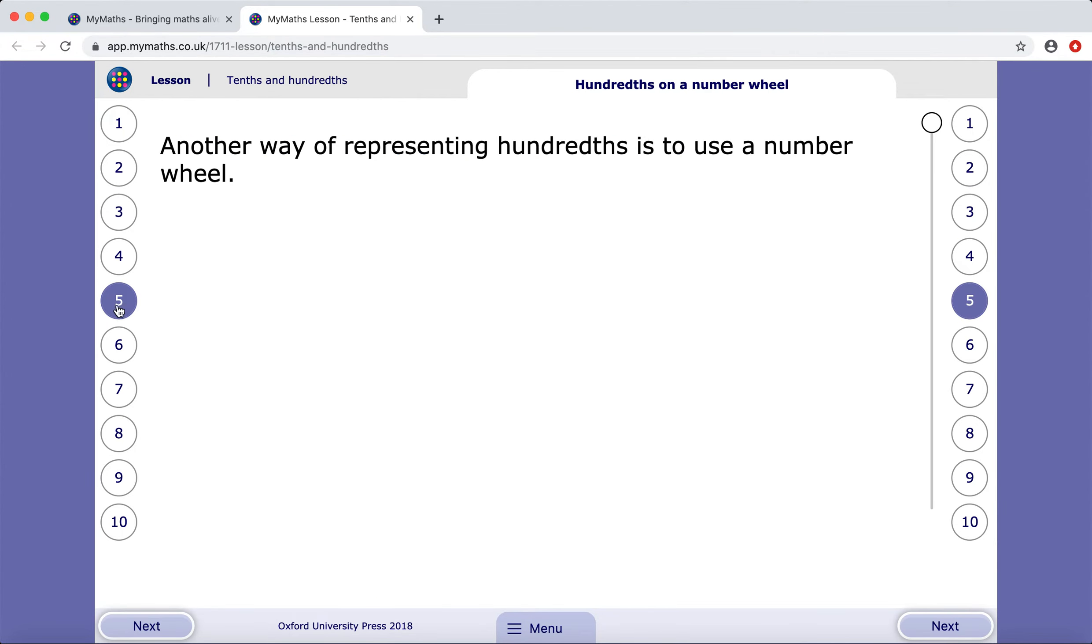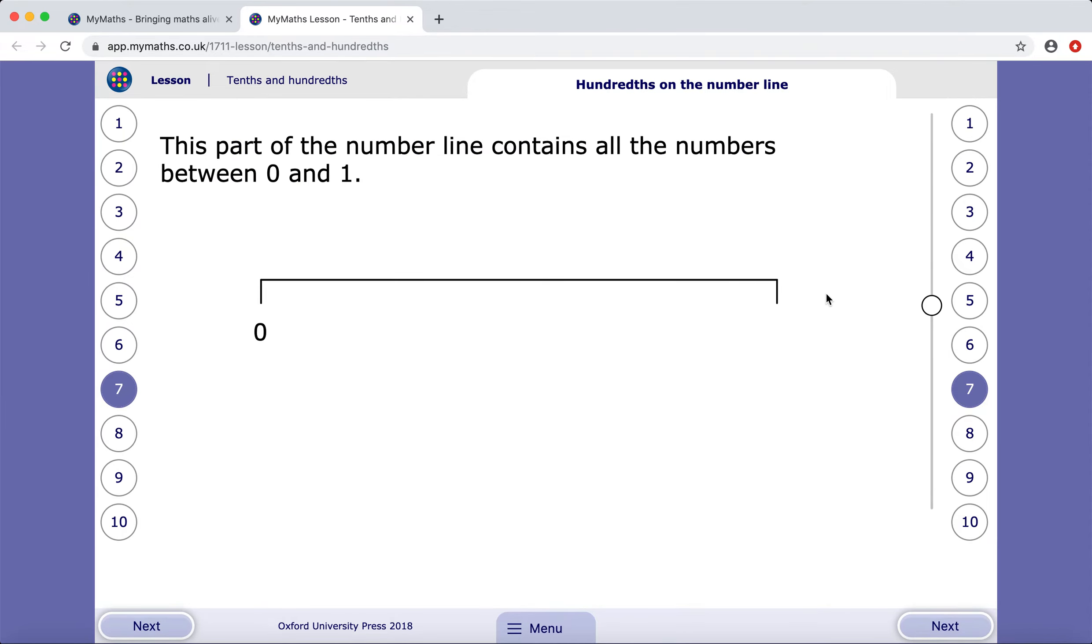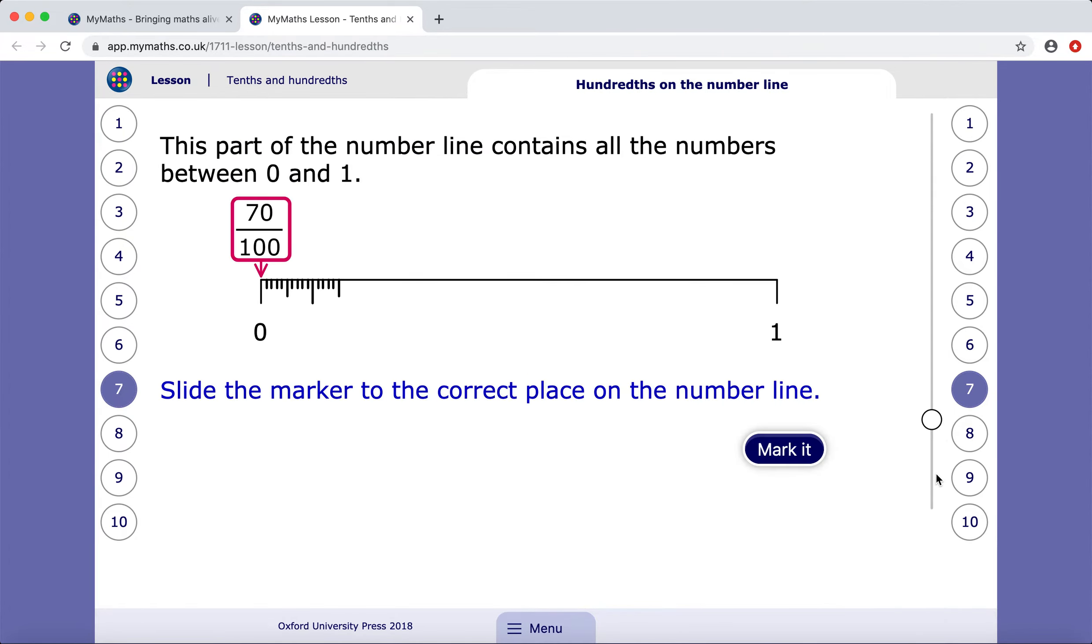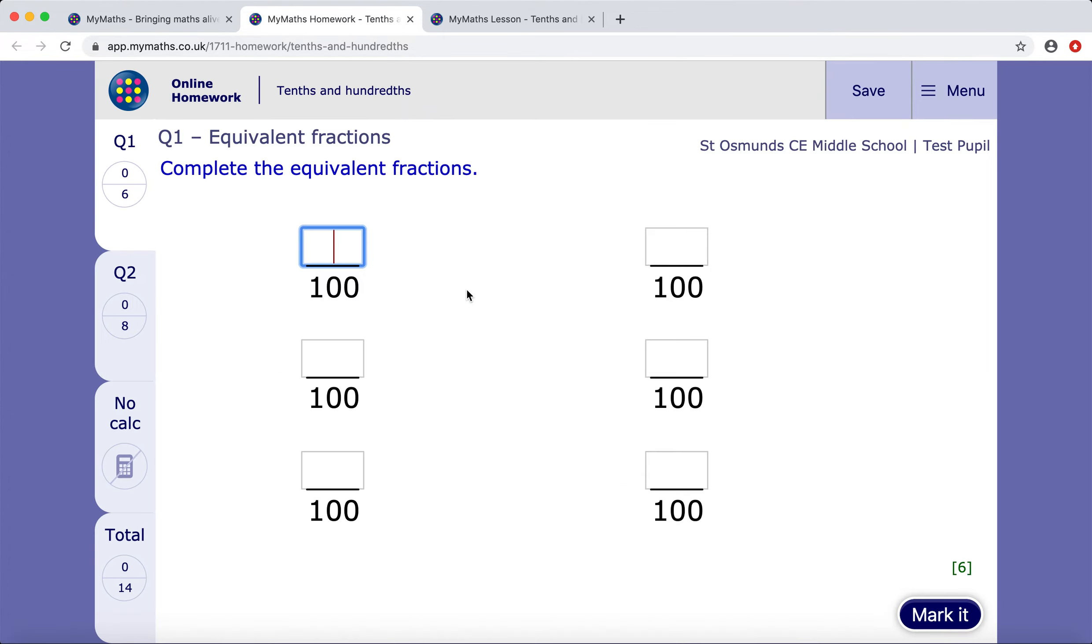And I continue through, using my slider if there is one, to complete the tasks and to read all the information. By the time I've got down here to number 10, I should be feeling quite confident, so I can go back and click on my homework.